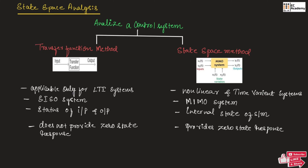In the state space method, we have multiple inputs which are given to a system. Depending upon the state variable of the system, it will provide the output. So in the transfer function method, we are having only one input and one output, but in the state space method, there are multiple inputs and we will be having multiple outputs.